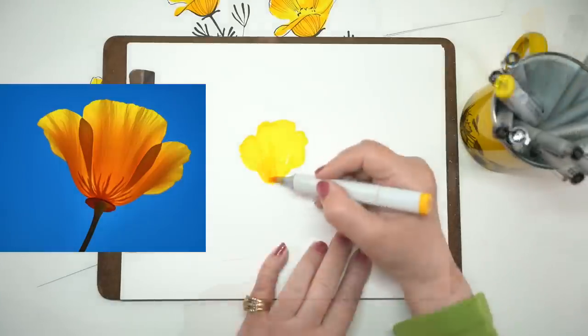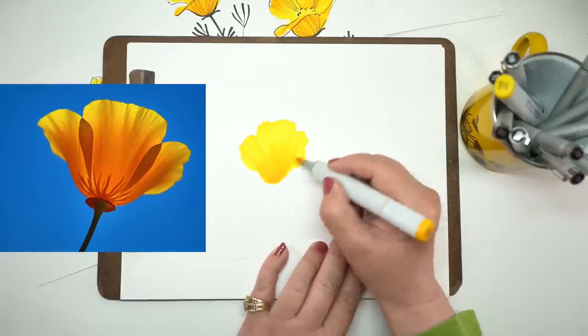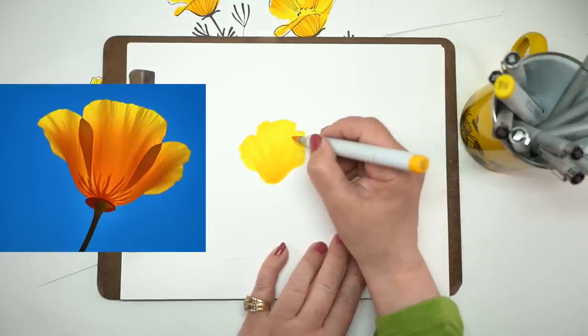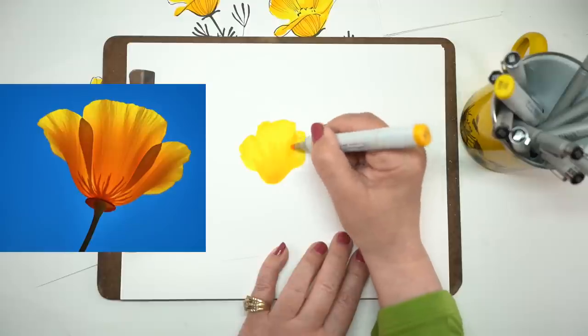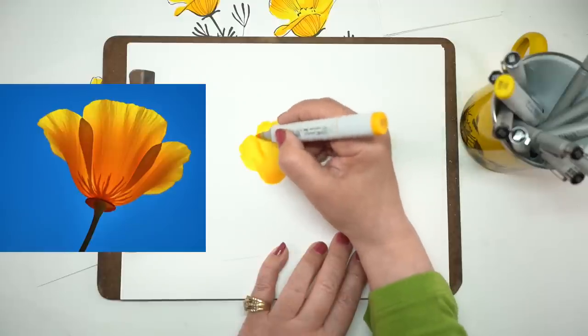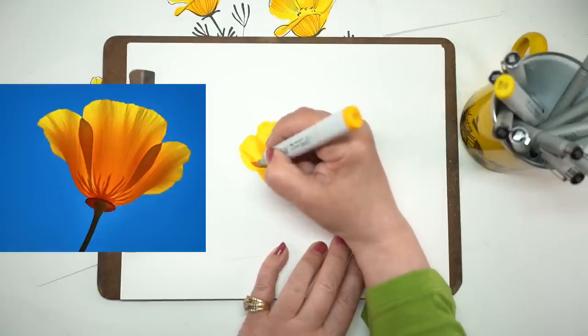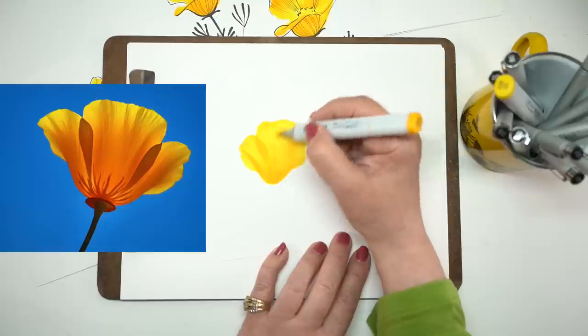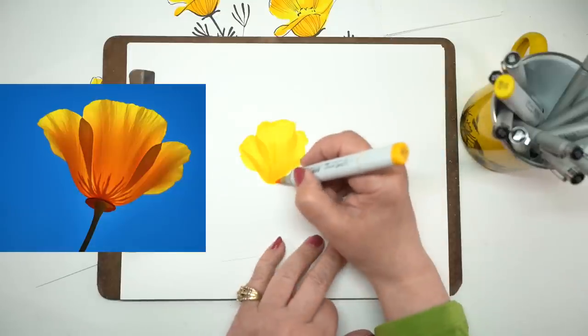This one is looking up from underneath, and it kind of has some really interesting overlap where it gets darker, where the petals crisscross, so they're shading each other and getting really dark.